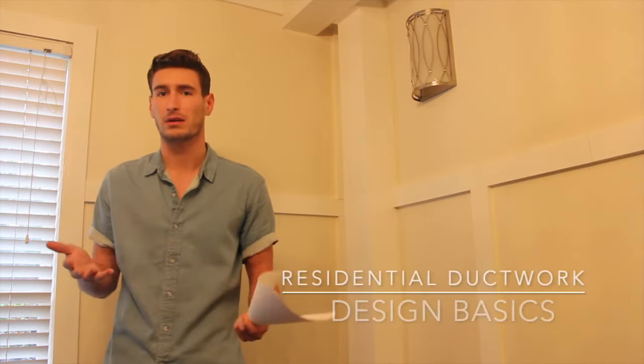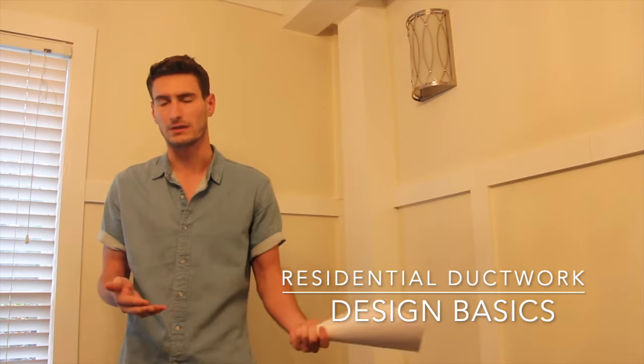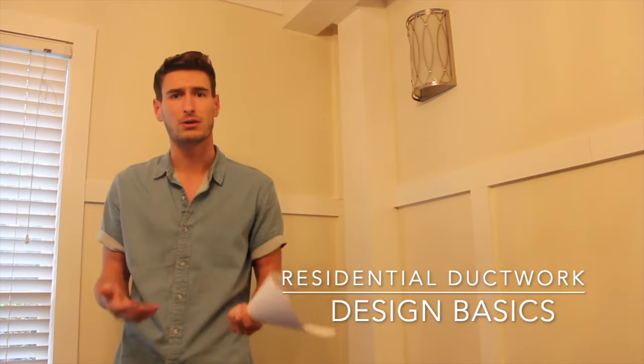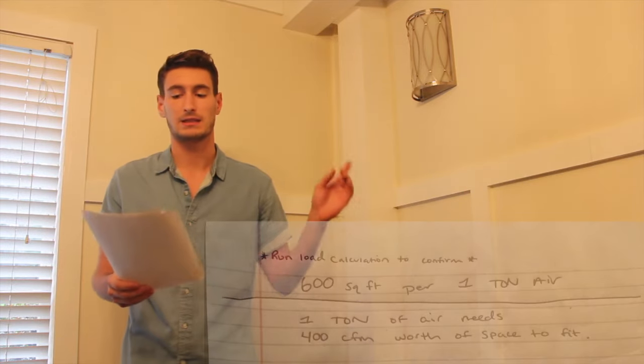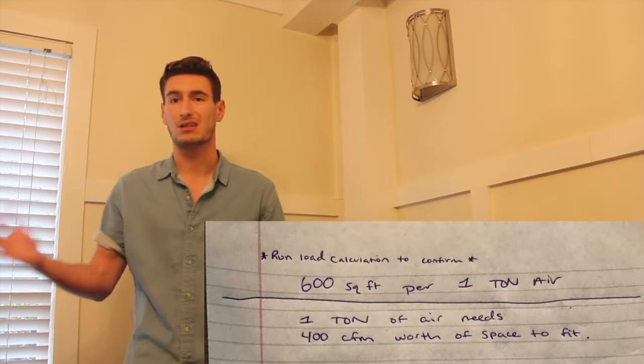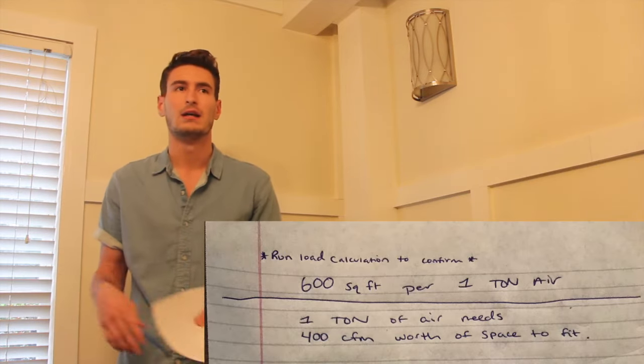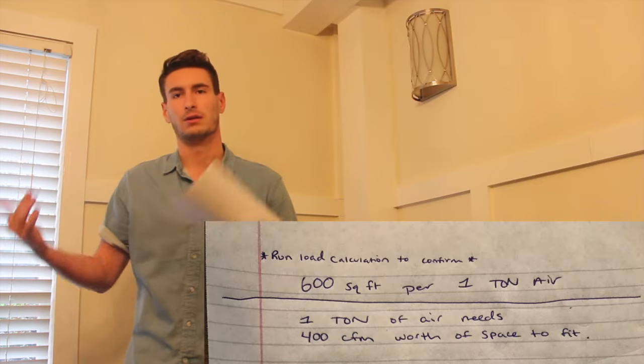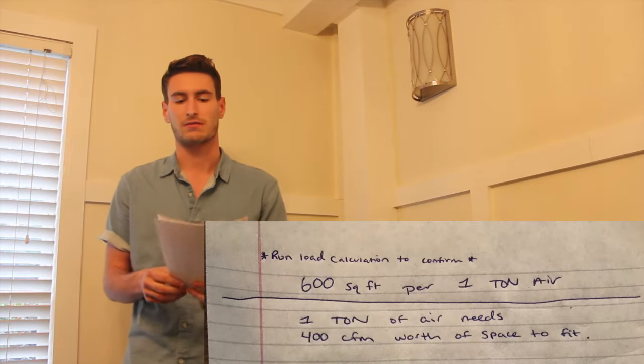The first thing is, if you're able to run a load calc for ductwork before you design it, that's the best case scenario, obviously. I know a lot of you guys don't necessarily know how to run a load calc, so instead we're going to be using the basics of ductwork design. The first thing we're going to use is our rule of thumb: 600 square feet per one ton of air. So if you have 600 square feet you're looking to condition, you need about one ton of air in order to satisfy the thermostat for that 600 square feet.